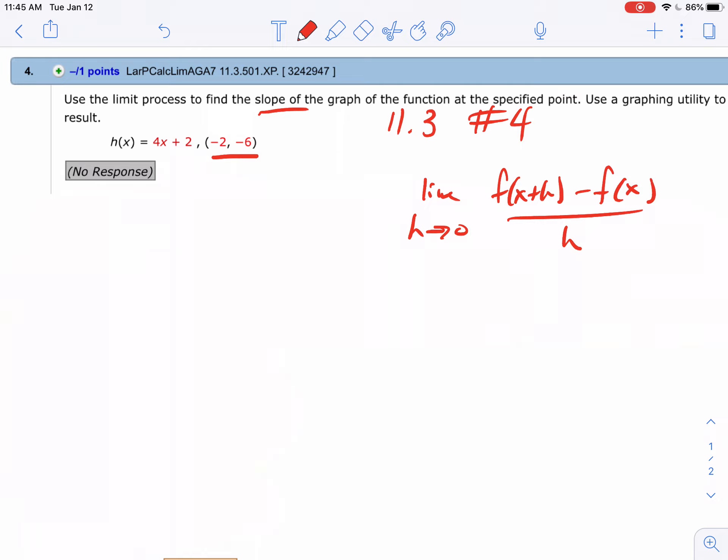Notice my numbers are in red, so you'll most likely have different numbers. First, write down the limit as h goes to zero, and anywhere you see an x, leave it blank and put x plus h in. I only have one x in my problem, so I only put x plus h in one time.